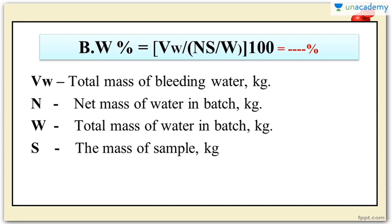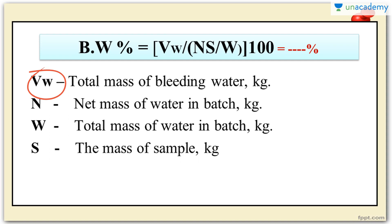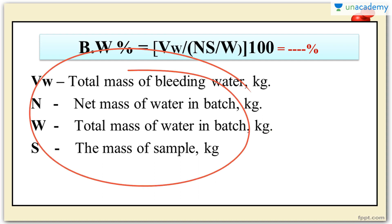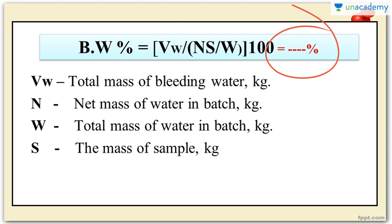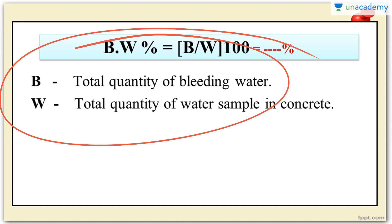Now let's move on to the calculation — very simple, just a percentage. The bleeding water percentage formula is: VW divided by (N multiplied by S divided by W), the whole multiplied by 100. VW is the total mass of bleeding water. N is the net mass of water in the batch in kilograms. W is the total mass of water in the entire batch in kilograms. S is the mass of the sample in kilograms. Apply all these values in the formula and you get the percentage of bleeding water.